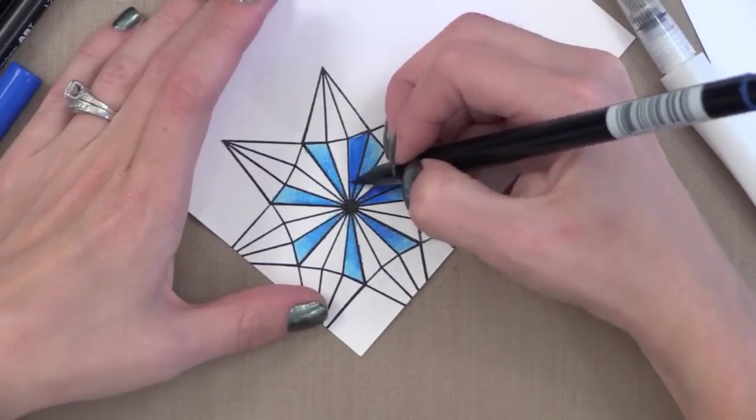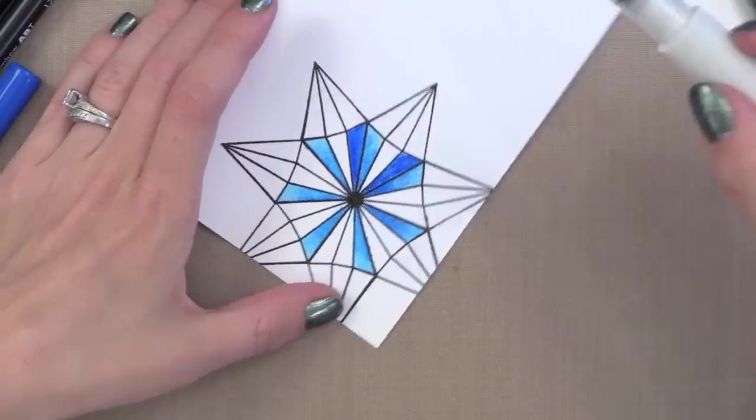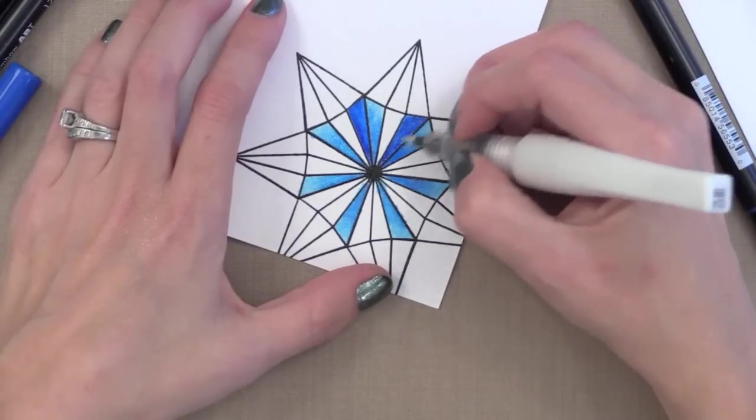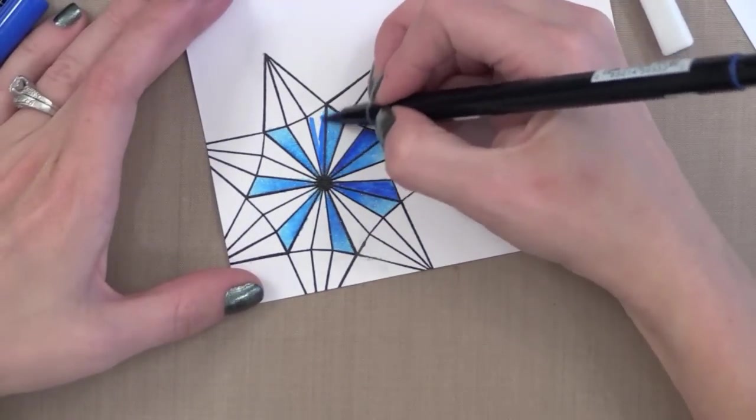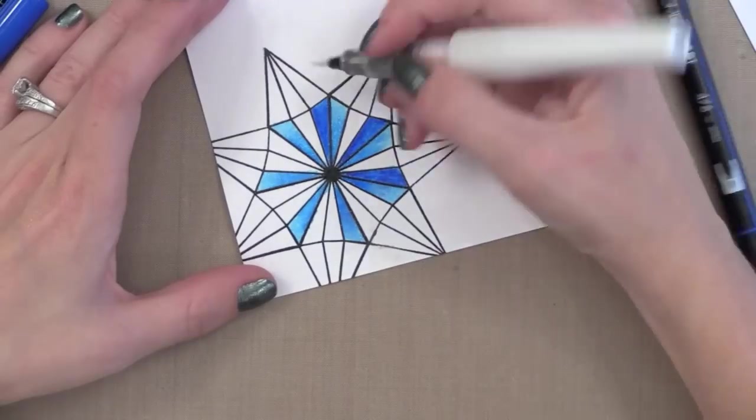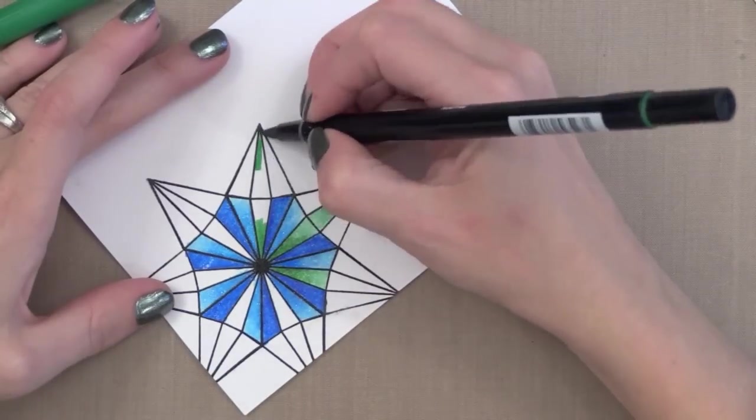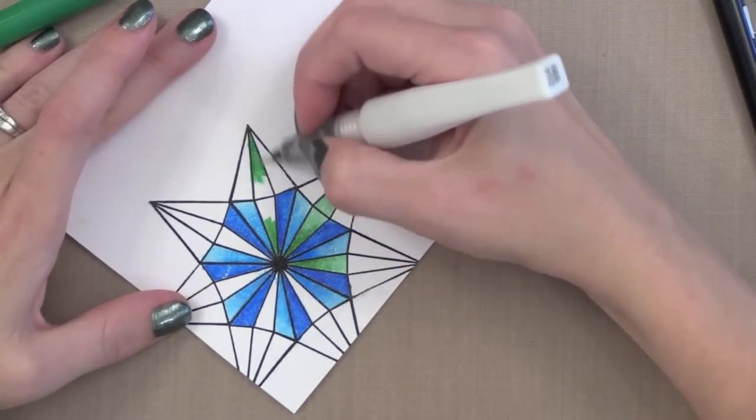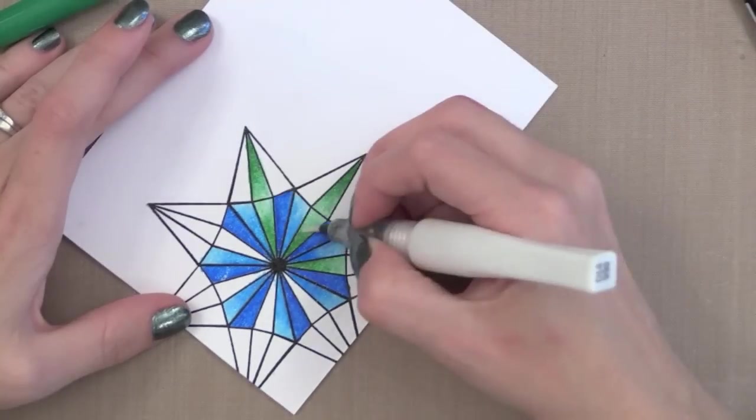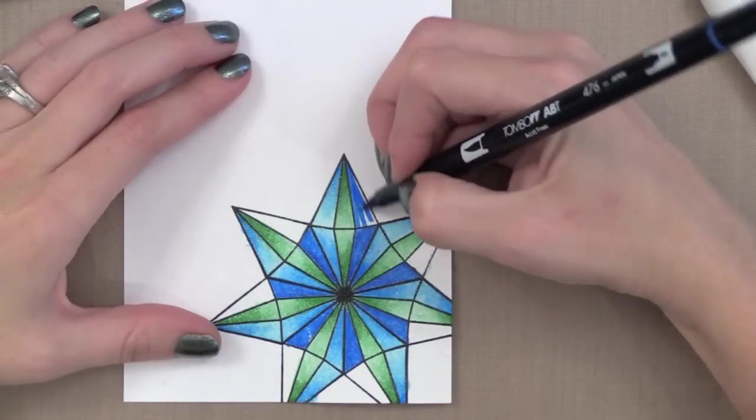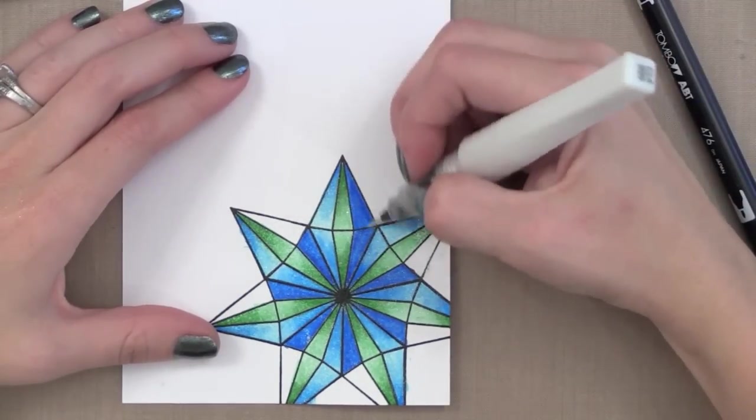Now I find it's best to put the marker down and then very quickly bring the Wink of Stella to it because while it's kind of still wet on the paper it blends better. Now the Wink of Stella will get blue on the tip, but all you have to do is brush the tip off on some scrap paper and that blue will go away and you can move on to the next color. But look how pretty this is. So we're getting a water color effect and shimmer all in one step.